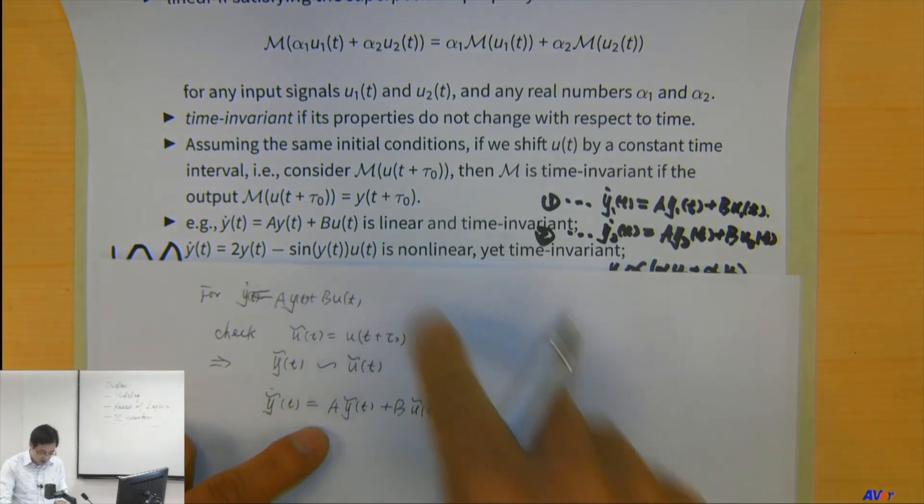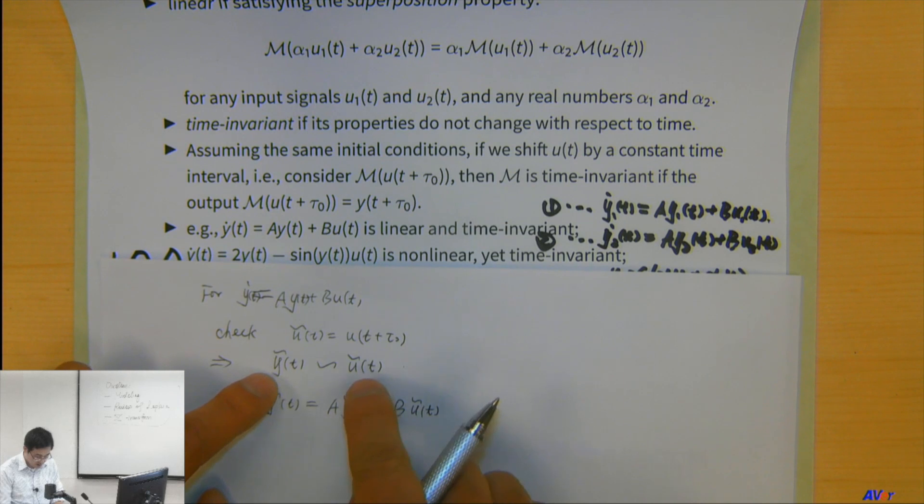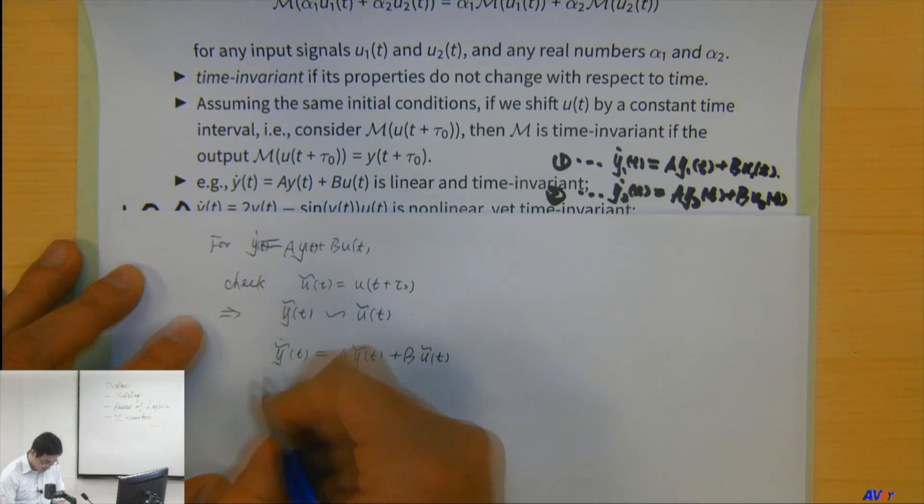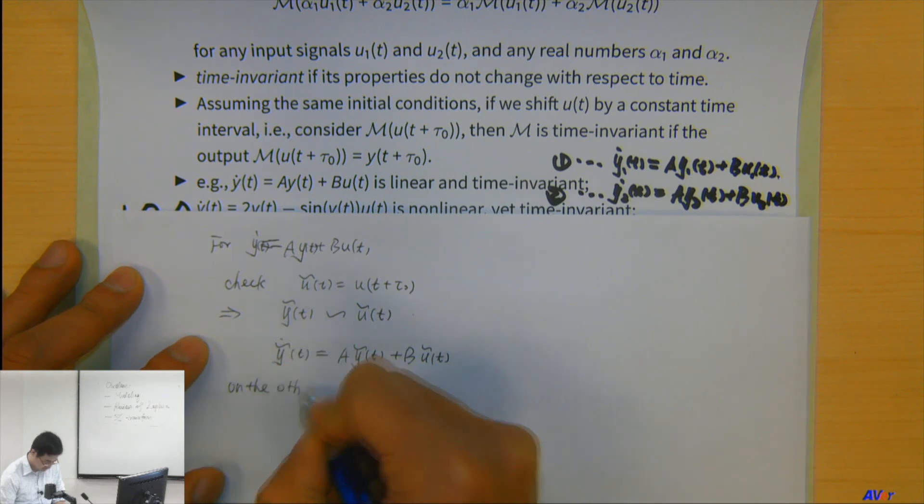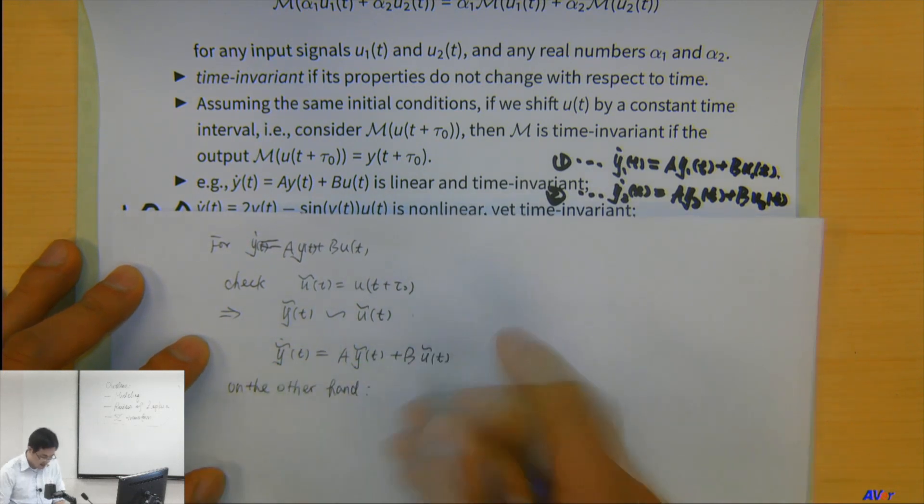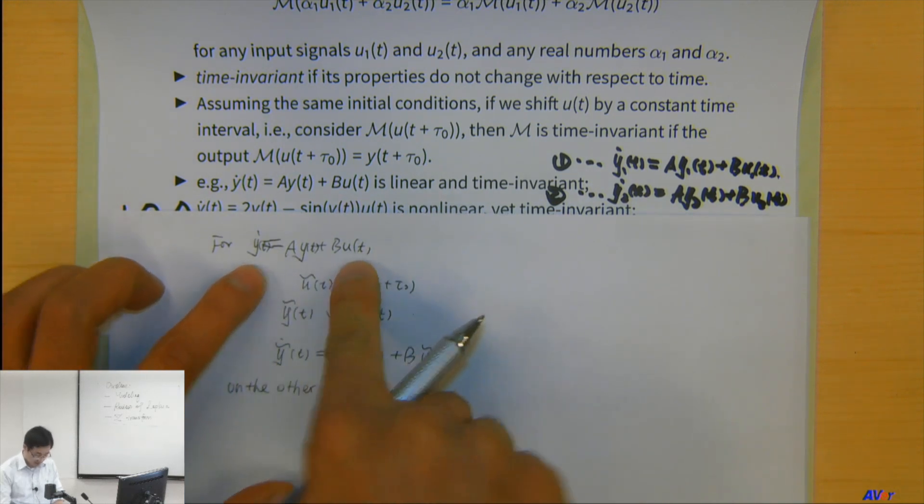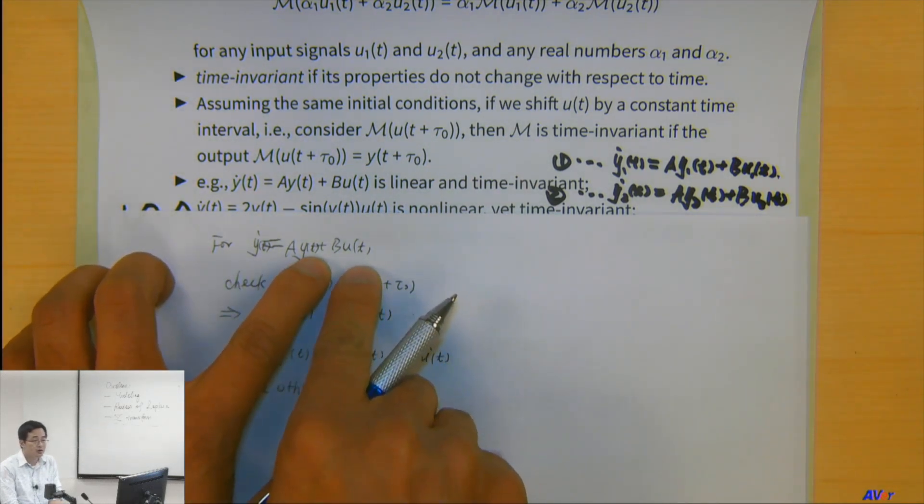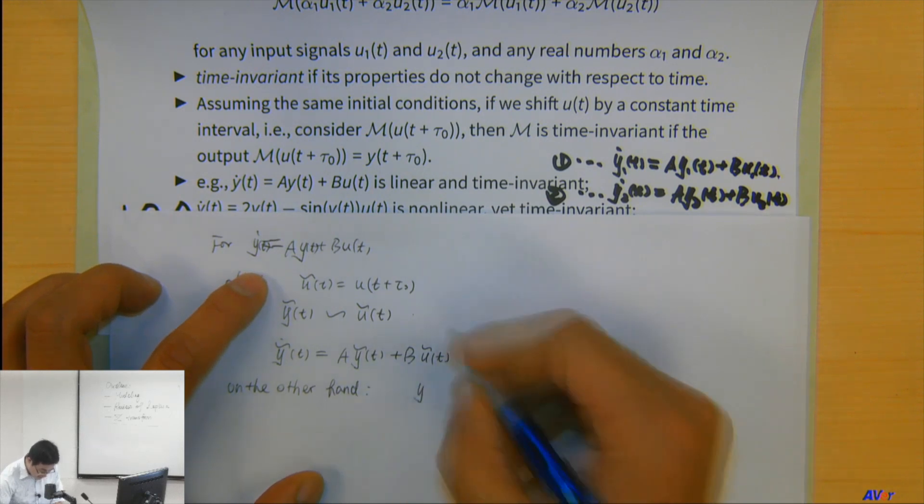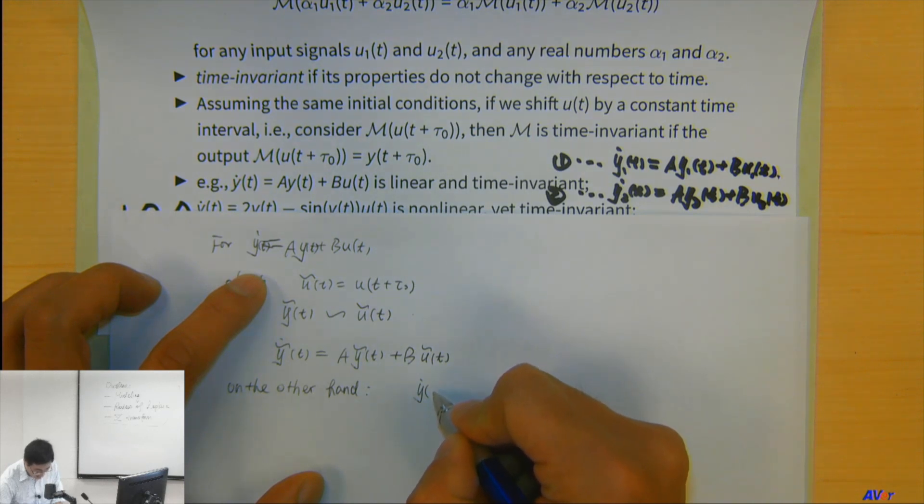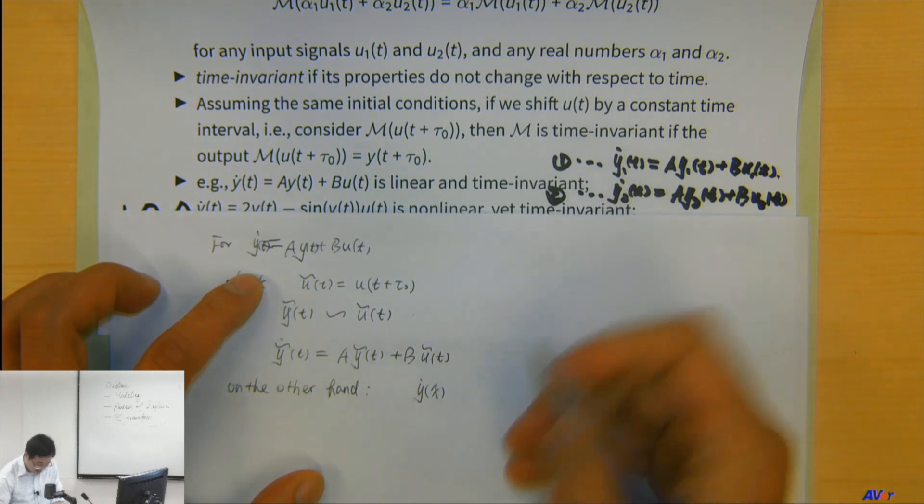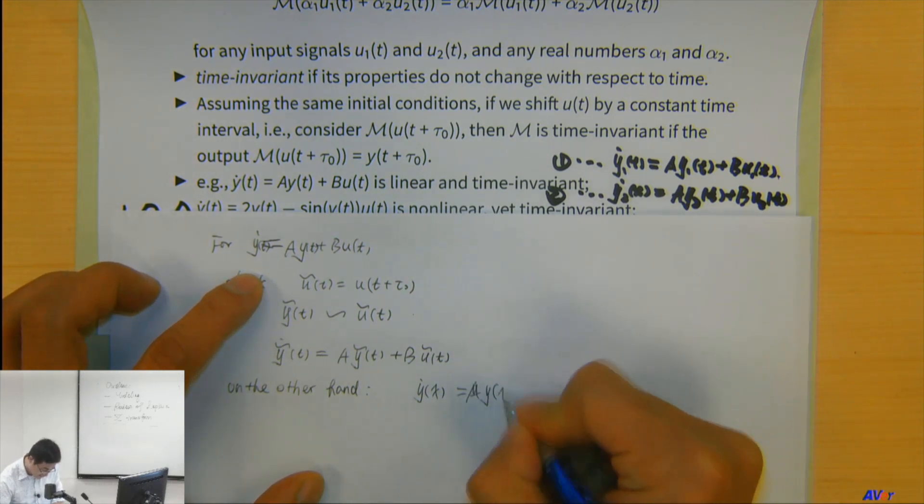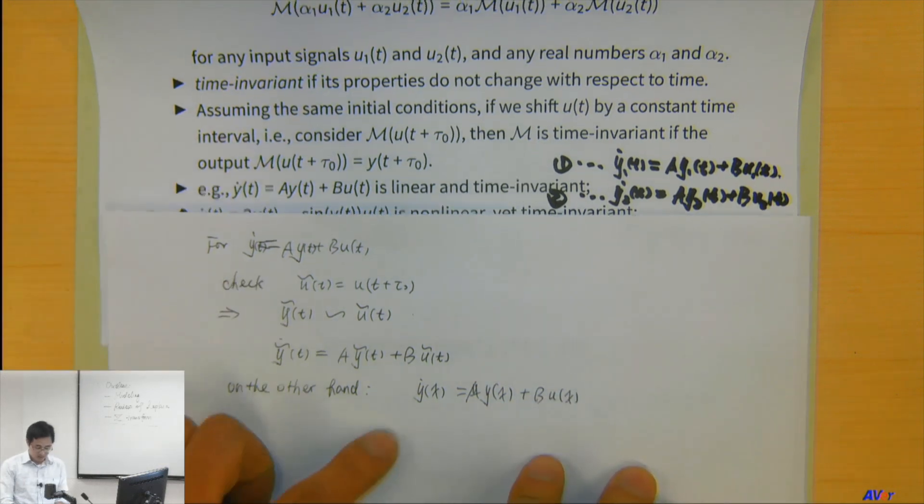It must satisfy, because this is the input output of this model, so it must satisfy y tilde dot equal to a y tilde plus b u tilde(t). It must be because this is what the model would give me, if you tell me this is the input, this is output. Now, on the other hand, I know that because how this model is written, I know that it doesn't matter what kind of index I use here. I can use t or I can use tau. I can use any variable that I want. It doesn't matter, it's going to be the same if I say, let's use x as a variable. It doesn't matter. It's going to be the same model.